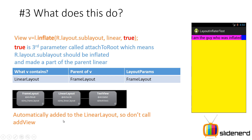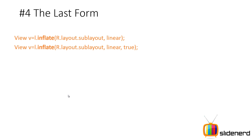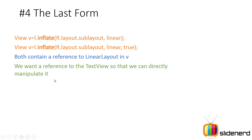Now the biggest question is: what happens if I put false here? If you've been watching everything about the layout inflator up to this point, give yourself a big pat on the back because this is going to be the most complicated part of the layout inflator — and also the last thing I want to discuss. Both forms of the inflate method we discussed gave a reference to the LinearLayout inside V. The problem is we don't want a reference to the LinearLayout inside V.